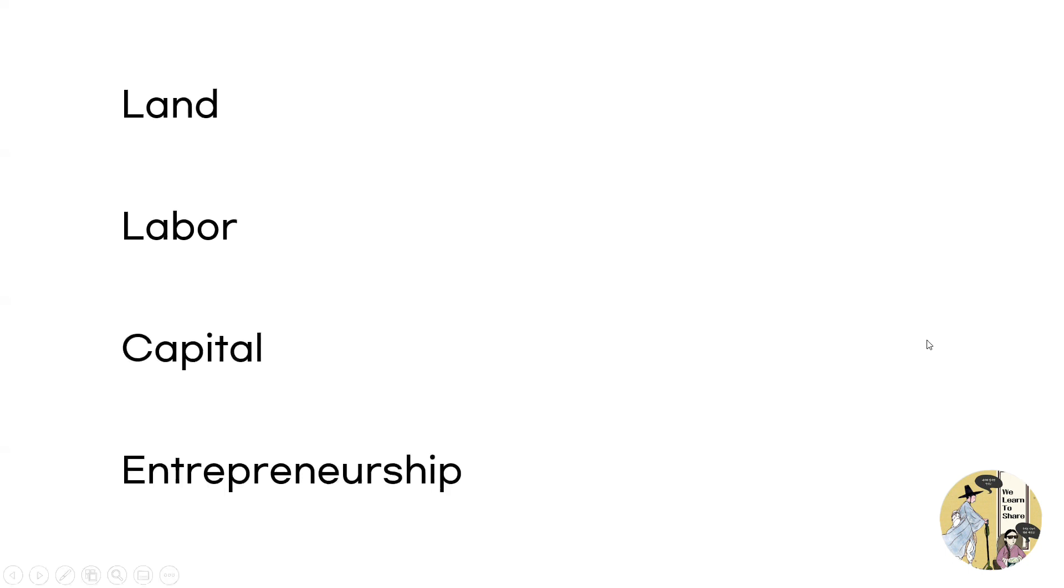So let's take a look at the factors of production, which are the factors that are used to produce a certain good or service. The first factor of production is land. And when I talk about land, it does not only refer to the physical land, but it talks about all the natural resources that are used to produce something. For example, water, oil, wood, and more can all be considered as land.